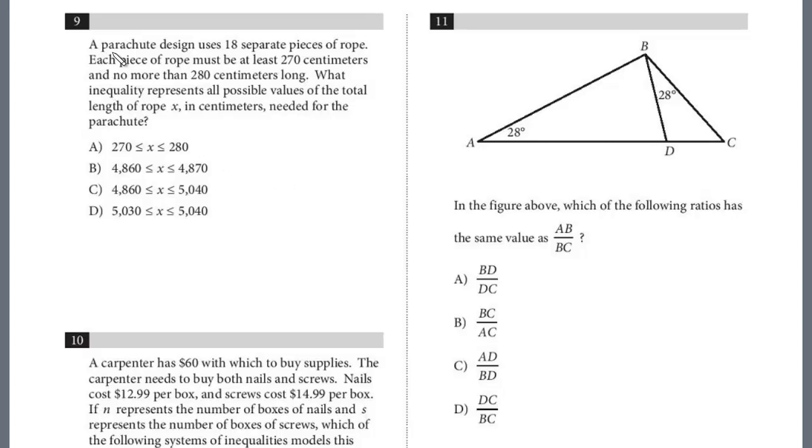All right, let's take a look at 9. A parachute design uses 18 pieces of rope. Each piece of rope must be at least 270 centimeters and no more than 280 centimeters long. What inequality represents all possible values of the total length of rope x in centimeters needed for the parachute?